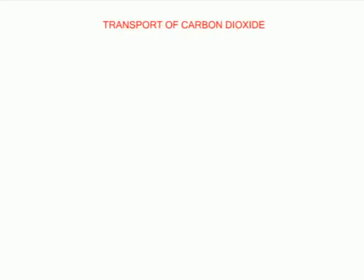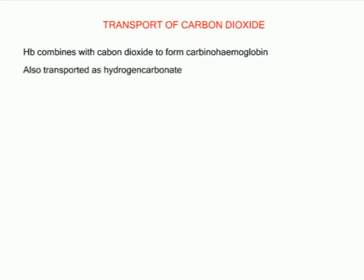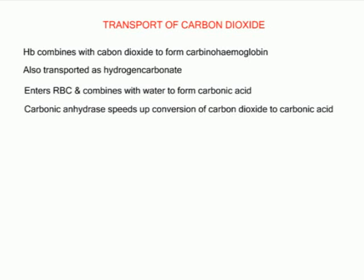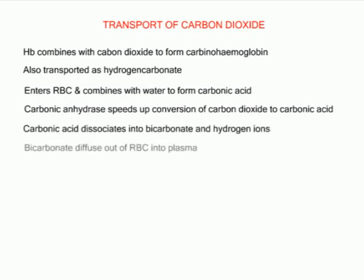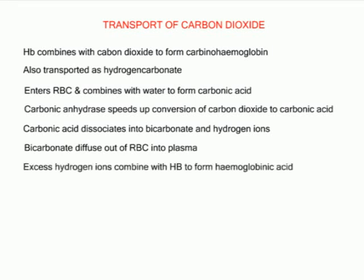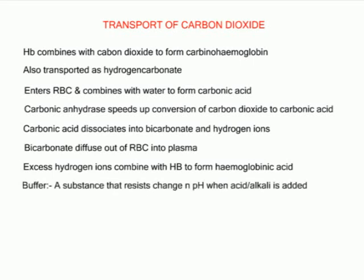Haemoglobin in red blood cells combines with carbon dioxide to form carbaminohaemoglobin, and most carbon dioxide is transported in this form from tissues to the lungs. Carbon dioxide is also transported as hydrogen carbonate. Carbon dioxide produced in the tissues enters the blood and combines with water to form carbonic acid — a reaction catalysed by the enzyme carbonic anhydrase found in red blood cells. The carbonic acid dissociates into bicarbonate and hydrogen ions. Bicarbonate ions diffuse out of the red blood cells into the plasma for transport to the lungs. Excess hydrogen ions combine with haemoglobin to form haemoglobinic acid, which acts as a buffer. Some carbon dioxide is also transported in plasma as carbonic acid.